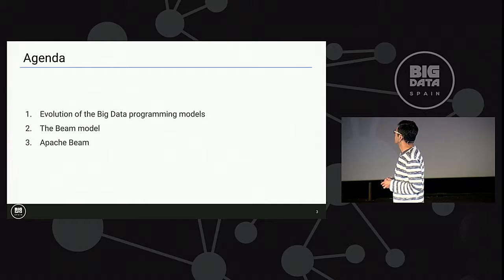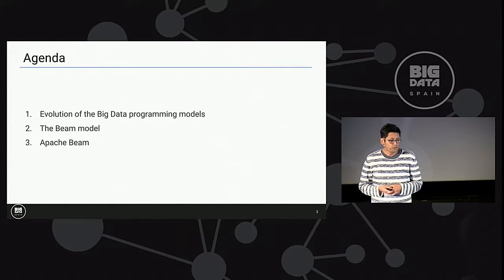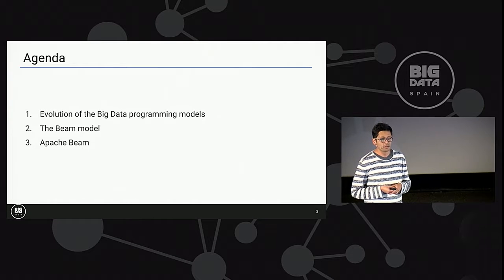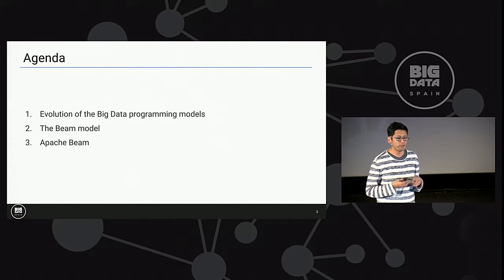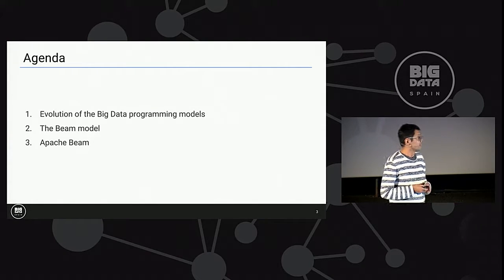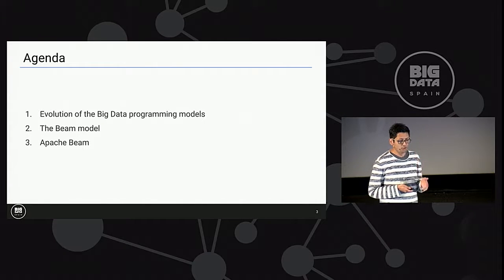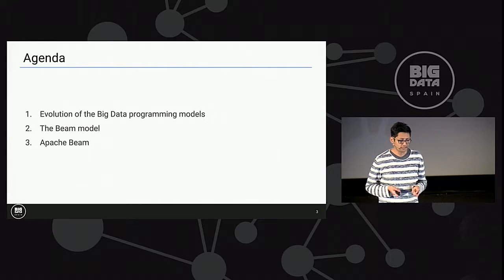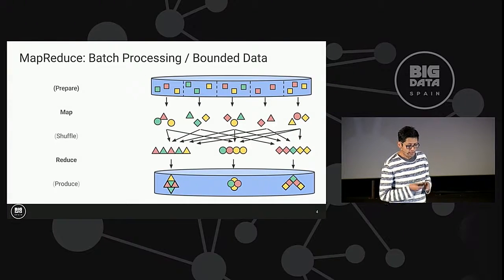So, now we're going to start to talk about Beam. We're going to divide the agenda in three parts. In the first part, we're going to talk about how all the programming models in big data have evolved. The second part is going to focus more on the Beam model. And the third part is going to be really about the Apache Beam project, concretely.